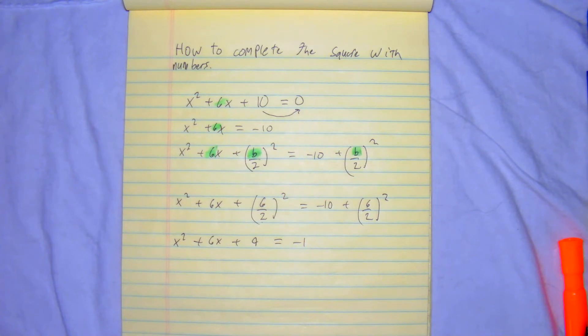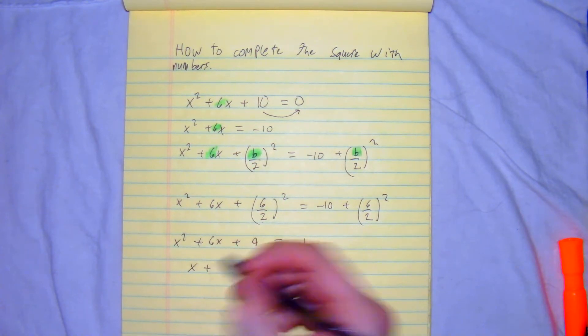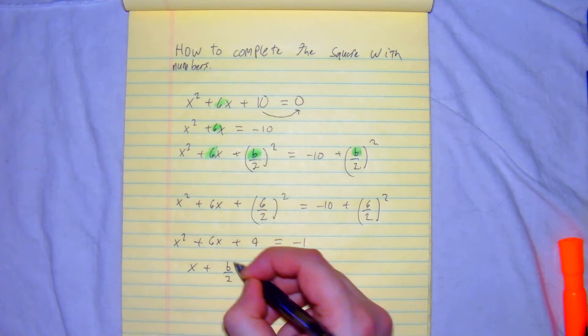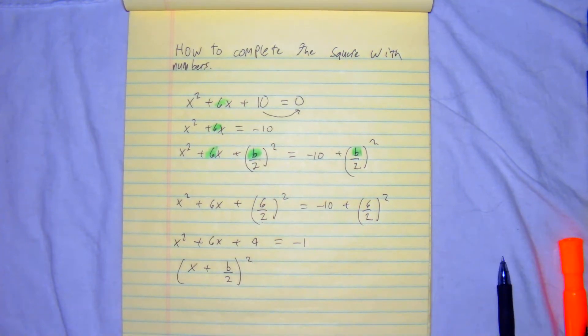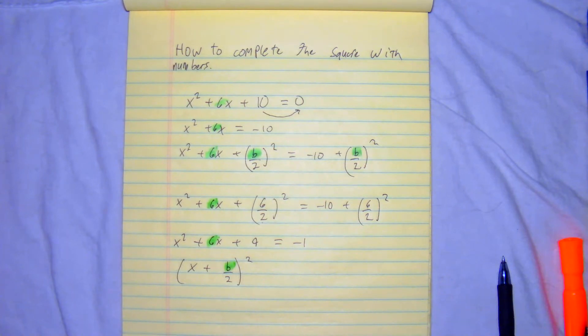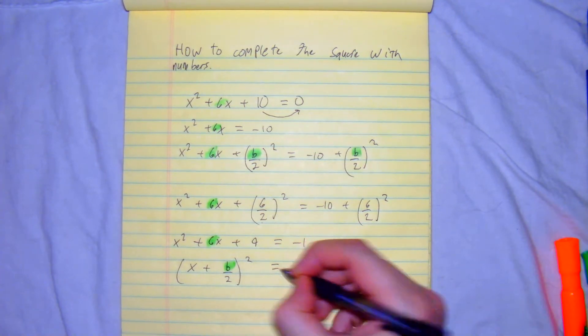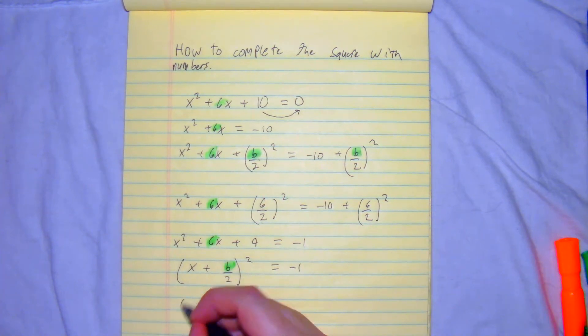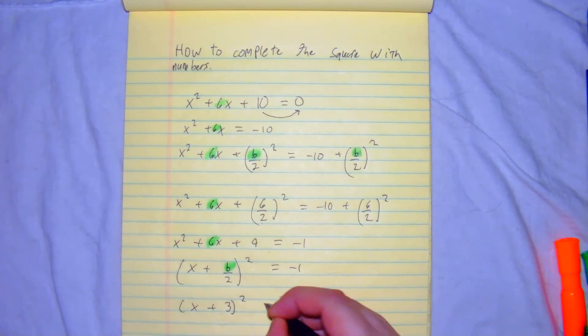So from here, we're going to do our perfect square. What we're going to do is we're going to make this into a square, which would look like this. So we're going to get x plus b over 2 squared. Remember, our b value kind of determines this value right here. So we're going to plug that in. You get x plus. The reason why it works is the magic number game, in essence. What multiplies to 9 but adds to 6, which would be 3 and 3. So you get x plus 3 squared is equal to negative 1.